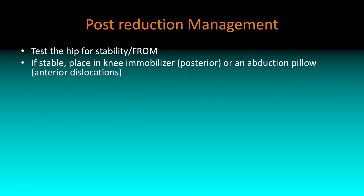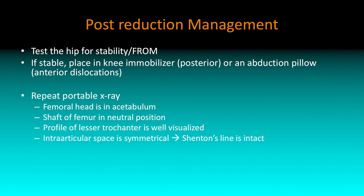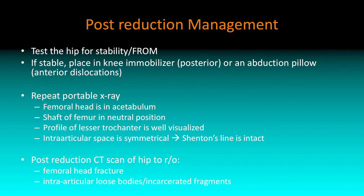Afterwards, test the hip and make sure it's actually in. If it's stable in a posterior dislocation, put them in a knee immobilizer; in an anterior dislocation, use abduction pillows. Get a repeat portable film: confirm the femoral head is inside the acetabulum, the shaft is in neutral position, the lesser trochanter is now visible in a posterior case since it's no longer internally rotated, and check your intra-articular space with Shenton's line. Most of the time you'll also get a post-reduction CT to confirm there's no femoral head fracture and no fragments inside the joint.